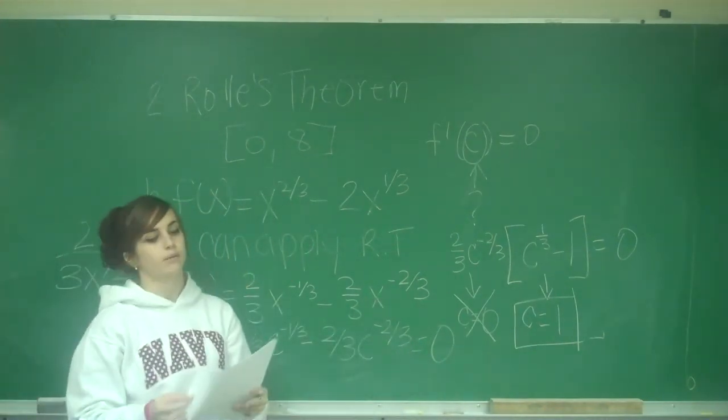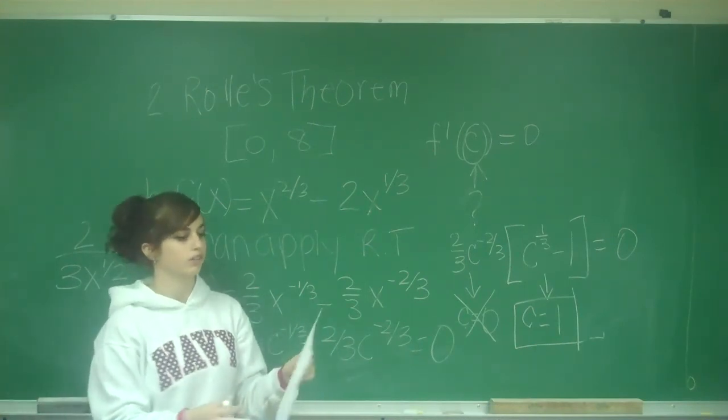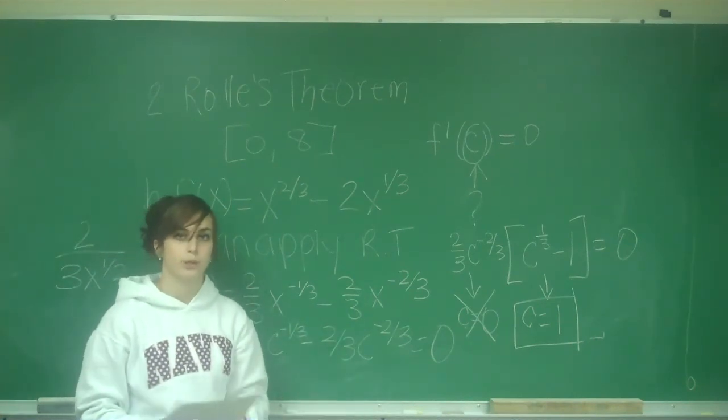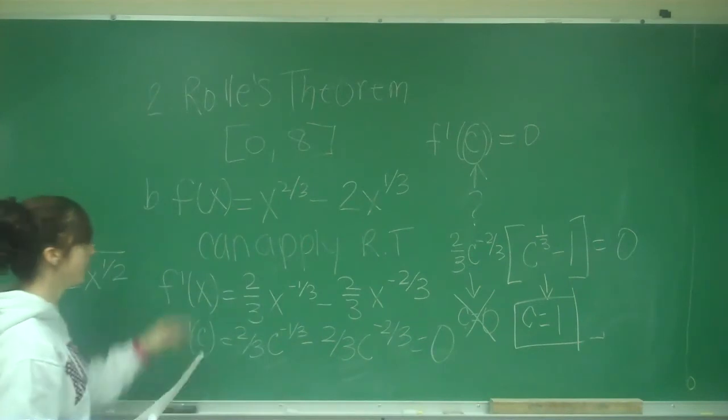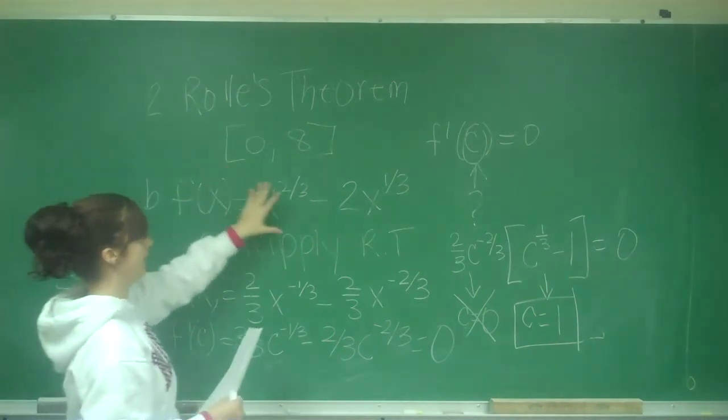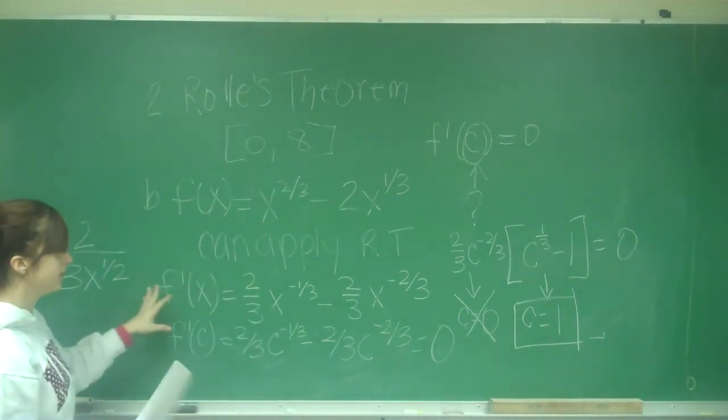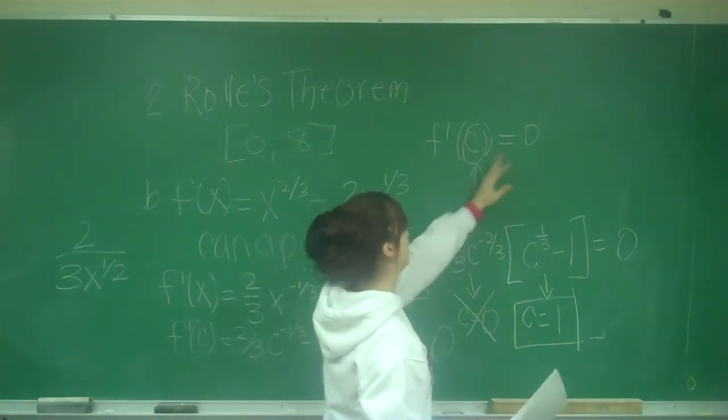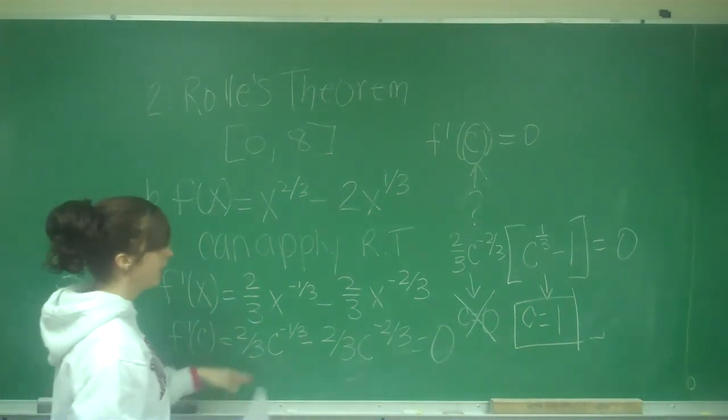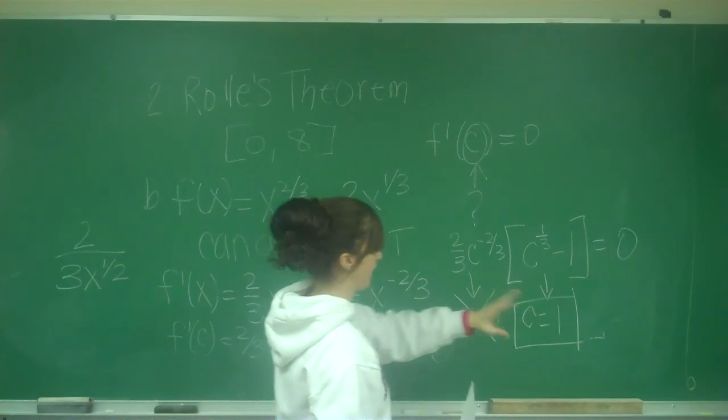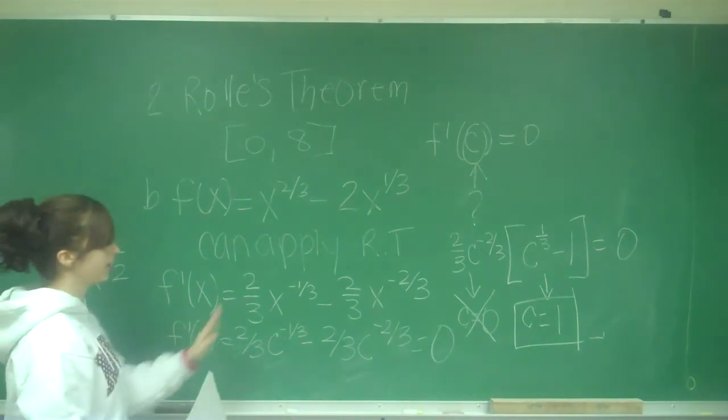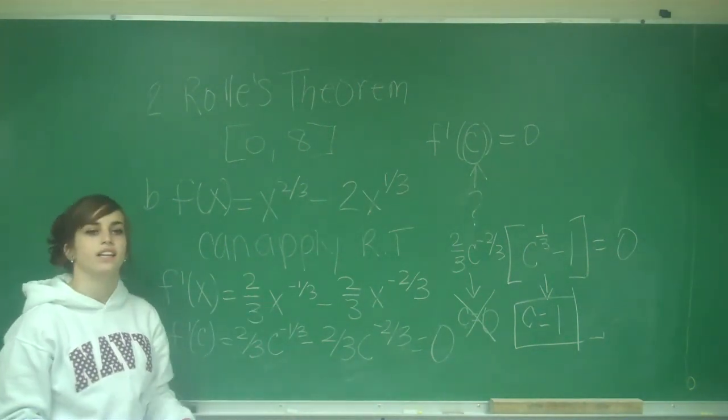So to review, on number 2, they want to ask us if we can or can't apply Rolle's theorem. For part A, we could not apply Rolle's theorem because f was not continuous or differentiable at x equals 1. But on part B, we can use Rolle's theorem because there's no discontinuities and it's differentiable from 0 to 8 of this function. So I need to find a value of c such that f prime of c equals 0. So I find the derivative of my original function, replace x with c, set it equal to 0 and solve for c. I have to check my original values, and I can't use c equals 0 because I can't divide by 0. So I use the value of c equals 1.